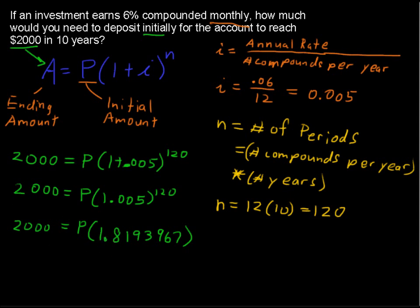Let's divide each side by the coefficient. I'll show that. 1.8193967. Just to belabor the point, 1.8193967. Okay, we are dividing each side and we get the initial principal of, I'm going to put the P over here, we would need to put in the grand total of $1,099.27.